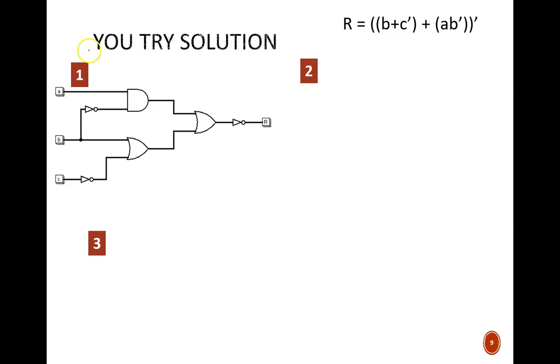This OR gate provides B or C prime. This AND gate provides AB prime. This OR gate sums those terms together. And this NOT gate does the final complementing outside the parentheses.